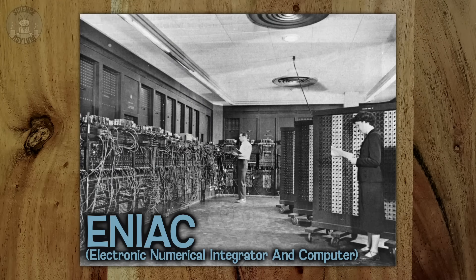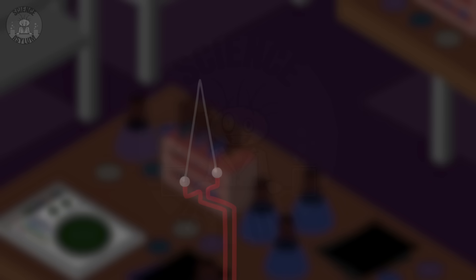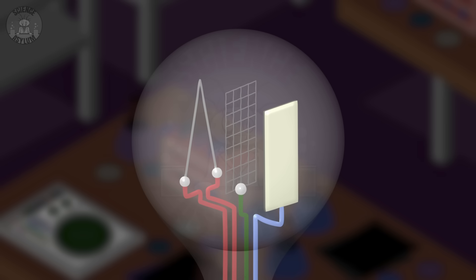Remember those computers that filled entire rooms? They used vacuum tubes for their automated switches. These tubes had a pretty simple design. All you need is a filament or source of electrons, a metal plate for them to jump to, and a mesh or coil in between to encourage them to jump when you want them to. Enclose it all in a glass tube and suck out the air. The electrical input controls the mesh, and therefore controls whether or not electrons flow. Bingo bango — automated switch.